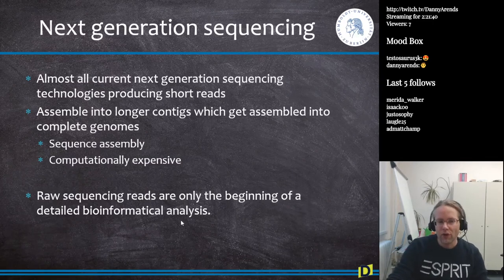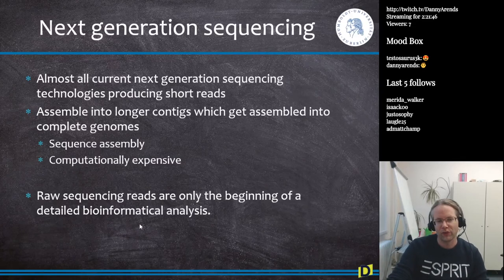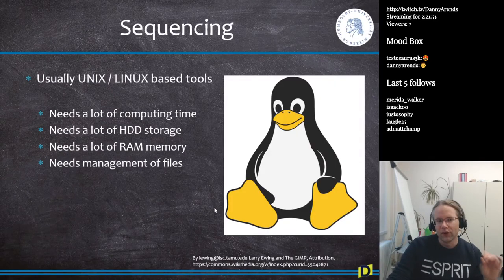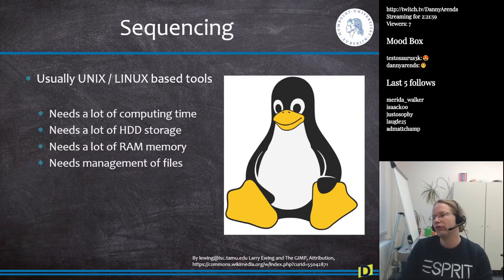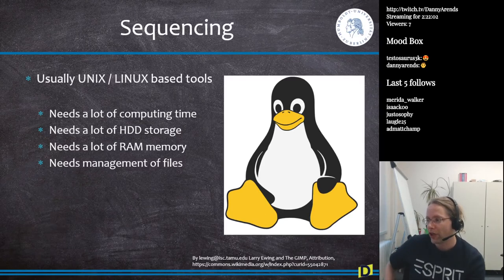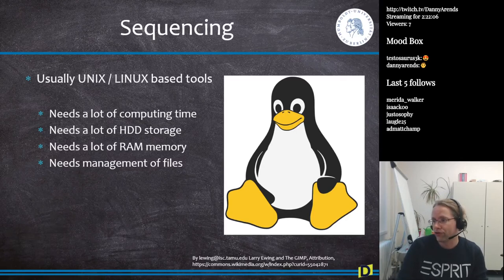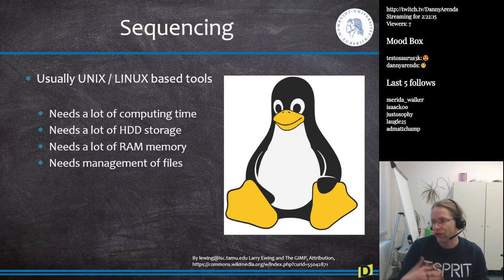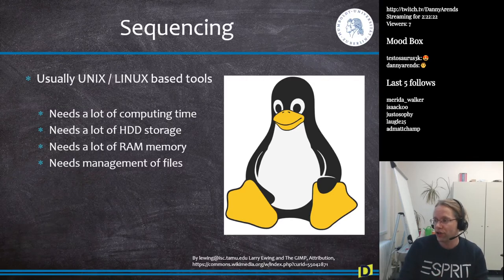Raw sequencing reads are only the beginning of the bioinformatics analysis. All of the tools discussed in the next few slides are usually only available for Unix or Linux, because they run on cluster machines or servers — machines with massive hard drive space, massive RAM, and generally 50, 60, or even 2,000 CPUs. These specialized machines don't run Windows or Mac; they are all based on Linux.